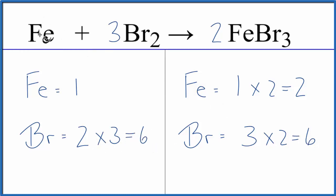And the iron, it's all by itself, so I need 2 of them and I have 1. I'll put a coefficient of 2. 1 times 2, that gives me 2.